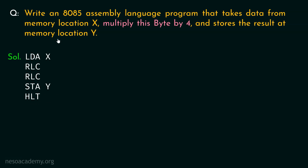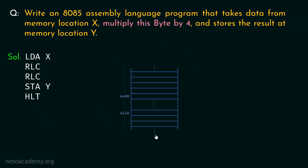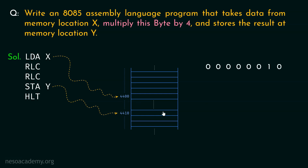Now this is the conceptual program. Let's do this in practical mode. We are choosing memory location X as 4400H and memory location Y as 4410H. Let's talk about the input data — within memory location 4400H we will store the input data, which in binary is 00000010.